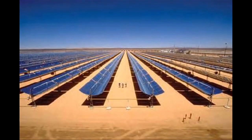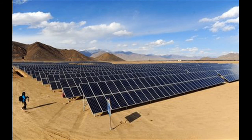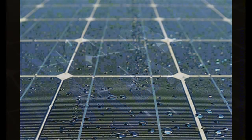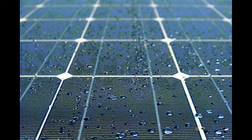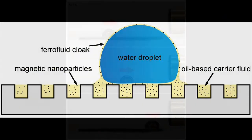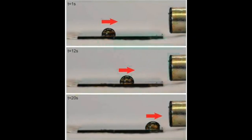The new approach could be useful for a range of applications. For example, solar panels and the mirrors used in solar concentrating systems can quickly lose a significant percentage of their efficiency when dust, moisture, or other materials accumulate on their surfaces. But if coated with such an active surface material, a brief magnetic pulse could be used to sweep the material away.